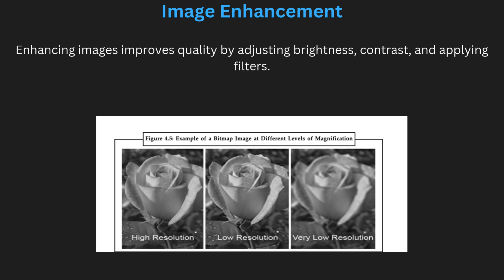Now, image enhancement. Image enhancement is the process of improving the visual quality of an image. This can be done by adjusting brightness, contrast, sharpness, or applying filters to reduce noise or correct colors. Enhancement techniques are widely used in photography, design, and video production to make images more appealing or to highlight specific details. For example, increasing sharpness can make an image clearer, while adjusting brightness can bring out hidden details in dark areas of a photo.